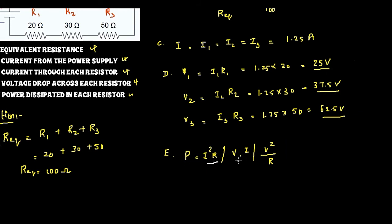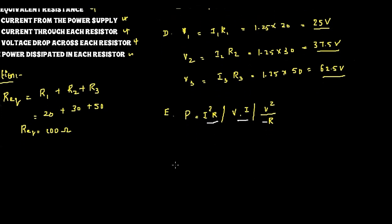We can use either of these three formulas to calculate the power. For P1 we can use I1 square R1, so that is equal to 1.25 whole square multiplied by 20, equal to 31.25 watts.